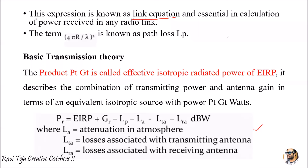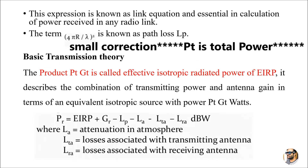The product of Pt and Gt is called the Effective Isotropic Radiated Power, or EIRP. In exams, if asked about EIRP, you should mention this product: EIRP = Pt × Gt. It describes the combination of transmitted power and antenna gain in terms of an equivalent isotropic source.